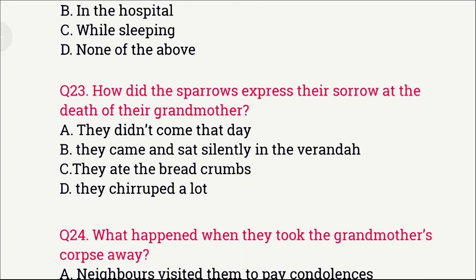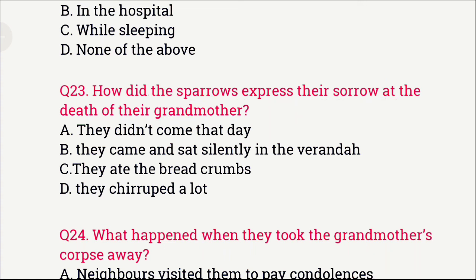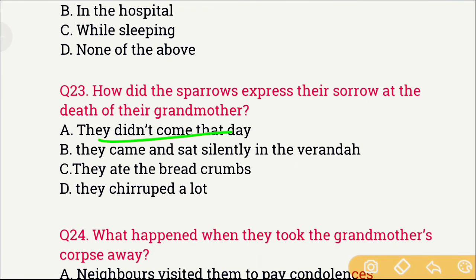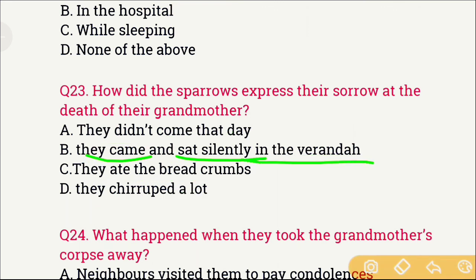Question number 23: How did the sparrows express their sorrow at the death of the grandmother? The sparrows that the grandmother used to feed — how did they express their grief when the grandmother died? The options are: A) They didn't come that day, B) They came and sat silently in the veranda, C) They ate the bread crumbs, and D) They chirped a lot. The right answer is option B — they came and sat silently in the veranda. All the sparrows came to the author's house and sat silently, expressing their sorrow.